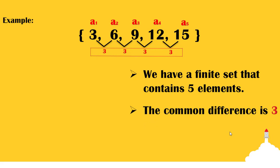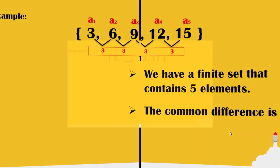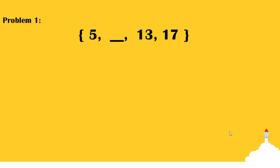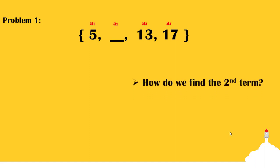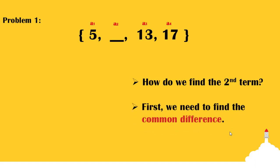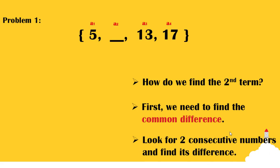Now, let us try to solve problems involving arithmetic sequence. Problem number 1: In a given set of 4 elements, where 5 is the first element, followed by an unknown, then 13, then the last term 17. The question is, how do you find the second term? First, we need to find the common difference, and we do that by looking for two consecutive terms and finding their difference. We have 13 and 17, and by doing this, we now have the common difference, which is 4.